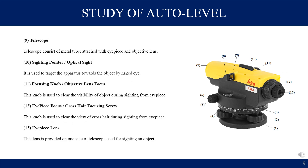Telescope: the telescope consists of a metal tube attached with eyepiece and objective lens. Sighting pointer or optical sight: also called a target gun, it is used to target and orient the operator towards an object by naked eye. You rotate the instrument and target it towards the object using the sighting pointer.